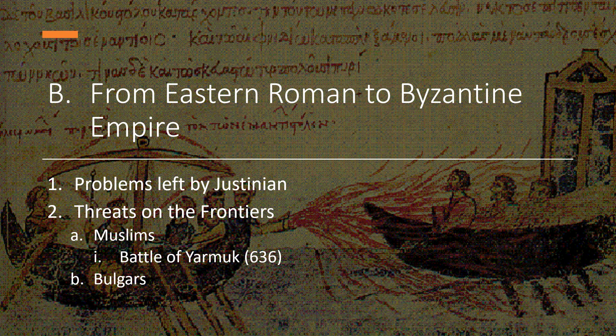This map depicts Justinian's empire before and then the areas he was trying to add — trying to regain the old western part of the empire as it transitioned from Eastern Roman to Byzantine Empire. Overextended, the empire was too large to protect, with an empty treasury and smaller populations due to plague.